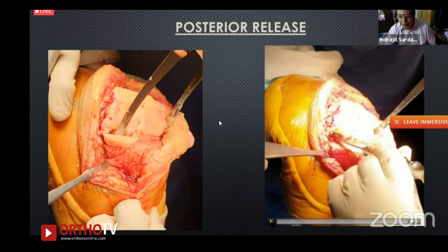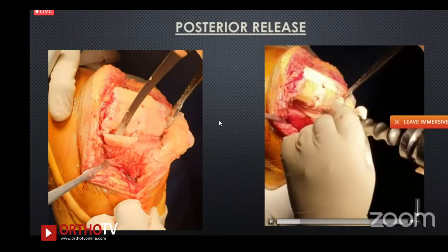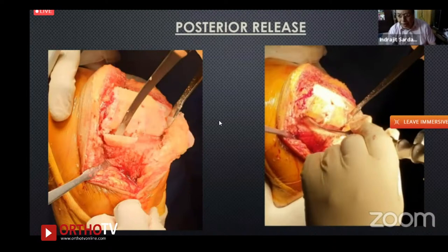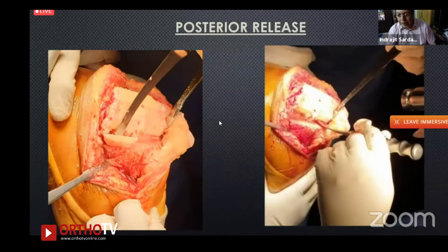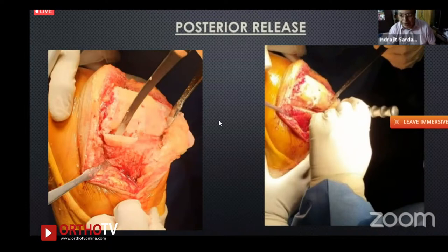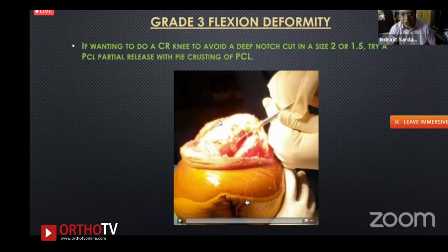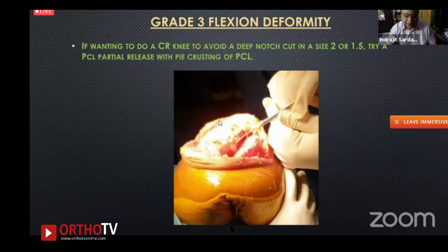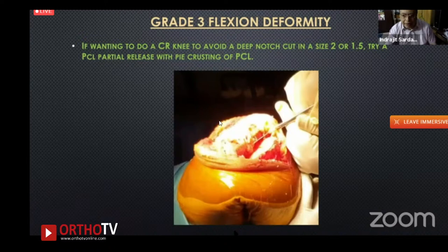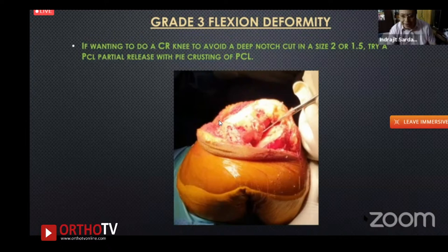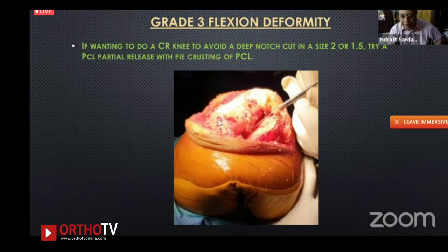A curved osteotome is used to go all the way around the back, releasing the capsule, and then the finger is inserted to clear posterior osteophytes. Good clearance is essential. For cases using CR to avoid a deep notch cut, pie-crusting of the posterior cruciate ligament can provide extra leeway when correcting fixed flexion contracture.